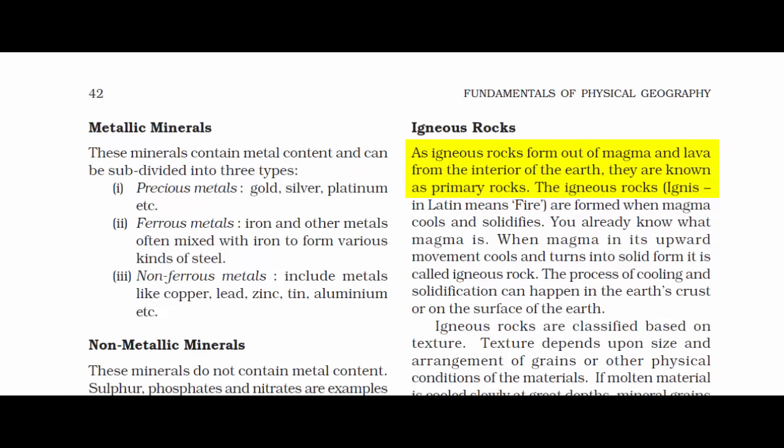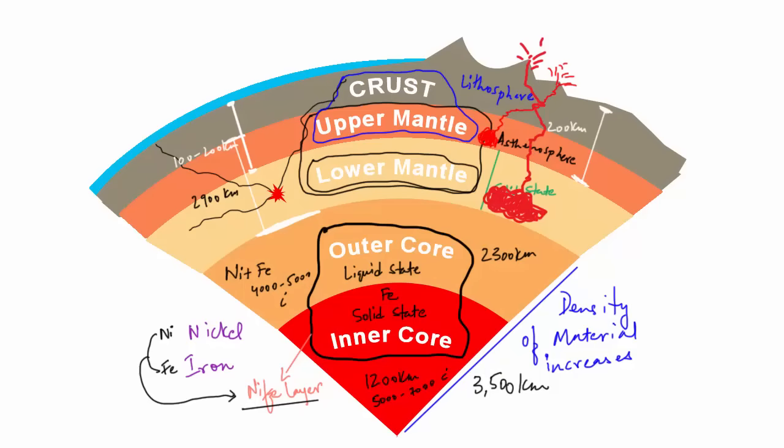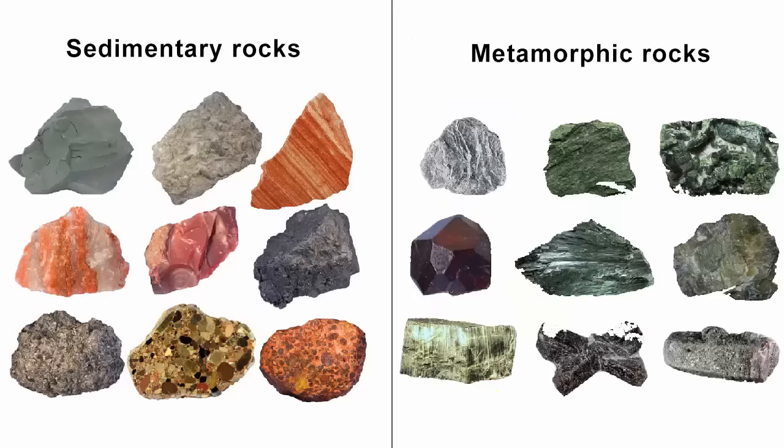Remember we called igneous rocks as primary rocks and the reason is because they are directly formed from the magma and lava when these molten materials solidify. So anything that is formed from the basic most ingredient of earth has to be termed as primary rocks. Now that we know igneous rocks are called primary rocks, ultimately the other rocks, that is the sedimentary and metamorphic rocks, are called secondary because they are formed from igneous rocks.